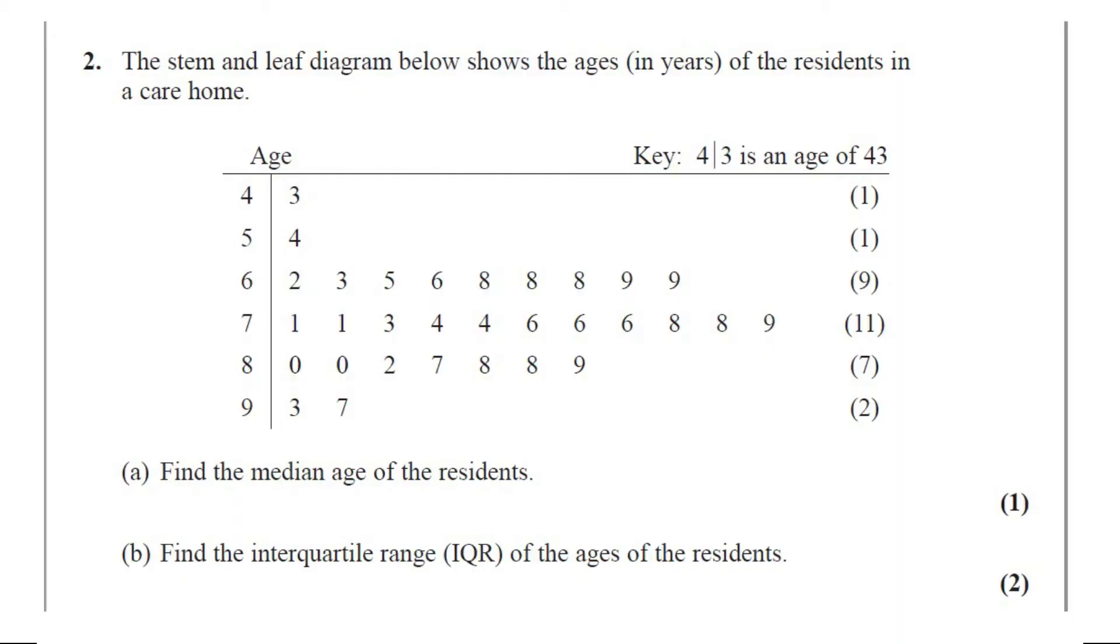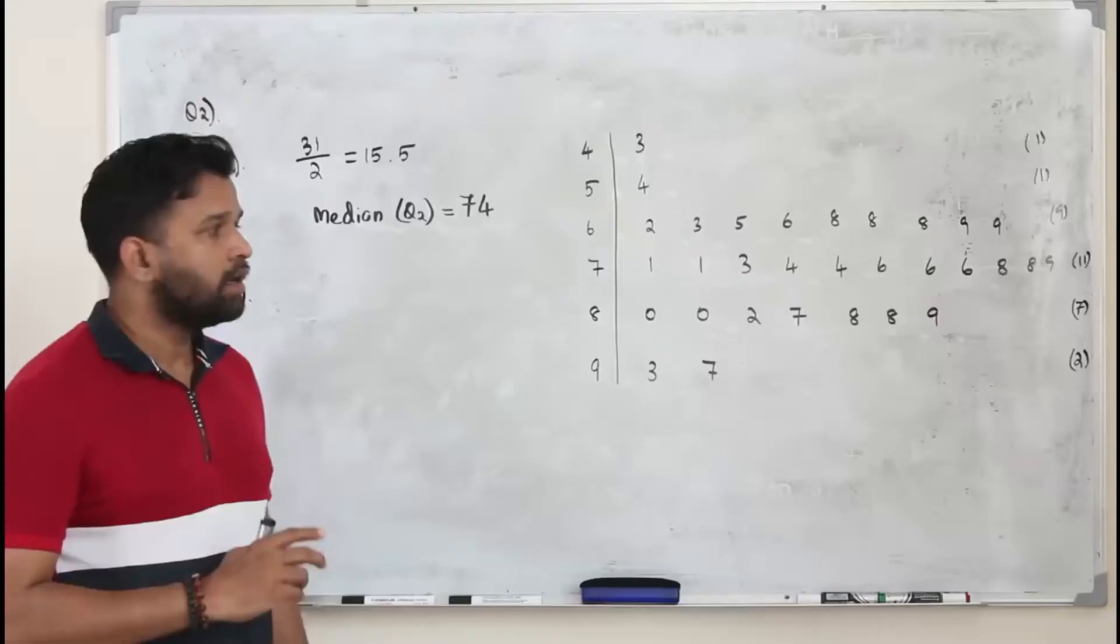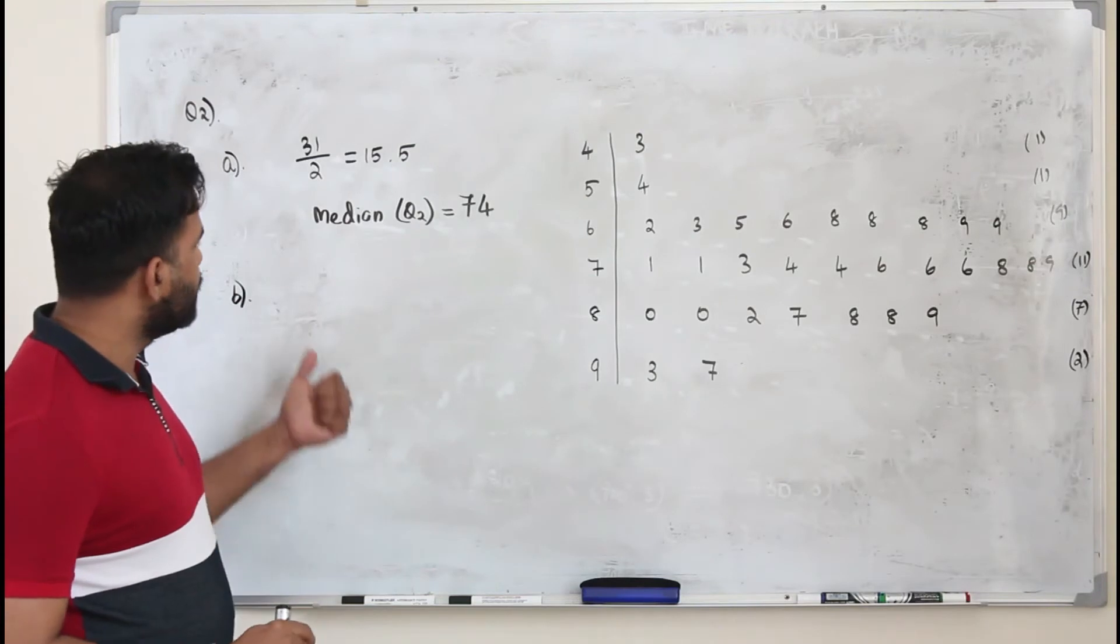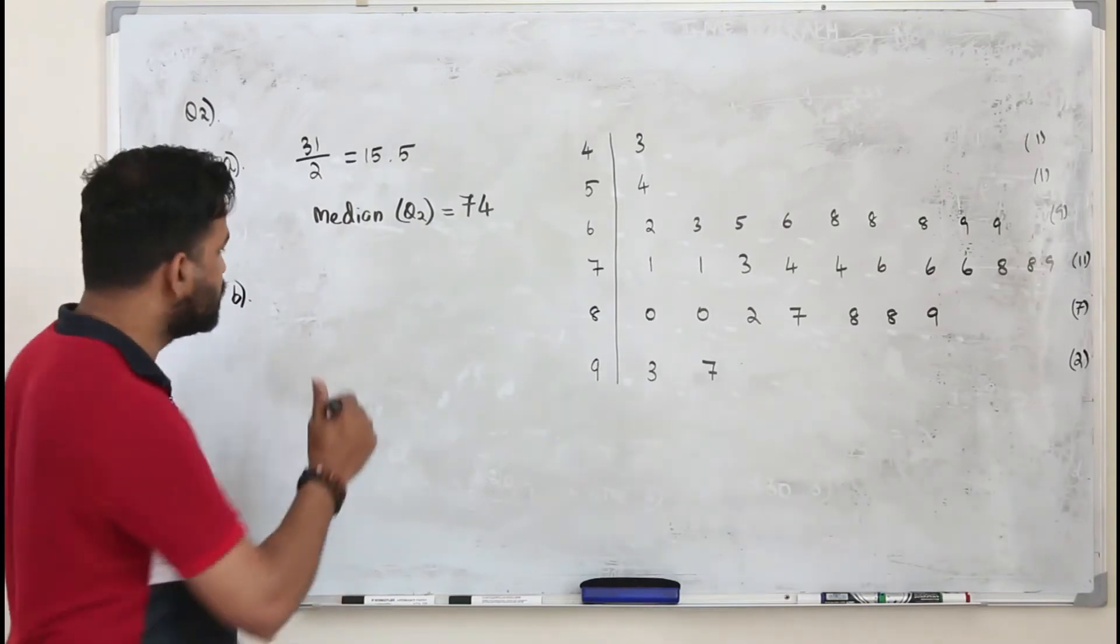Part B: find the interquartile range (IQR) of the ages of the residents. This question got two marks. Now in part B, they want you to find the interquartile range IQR.